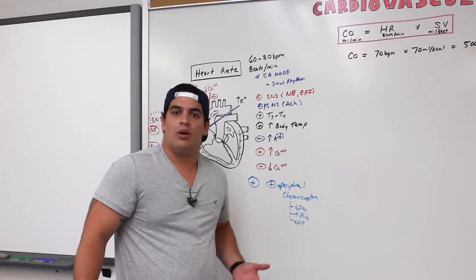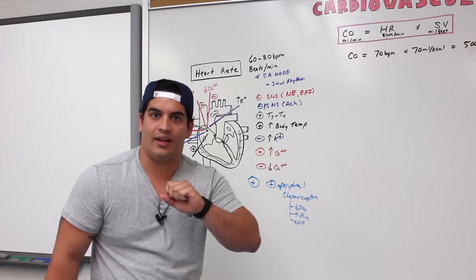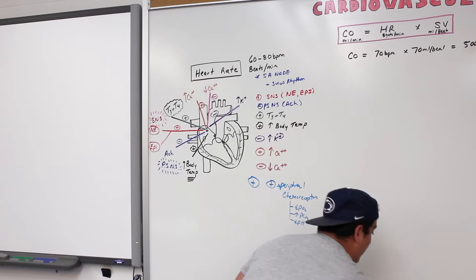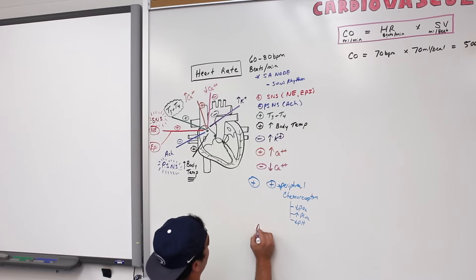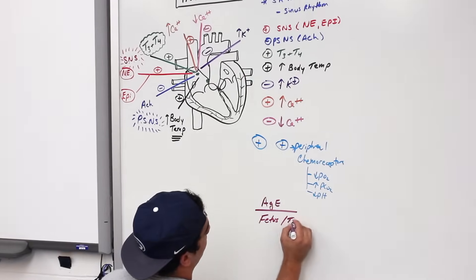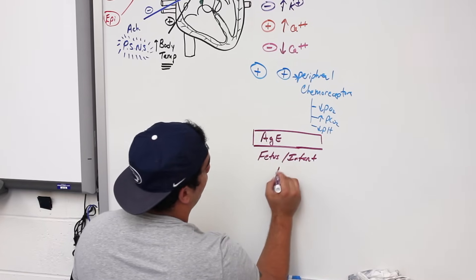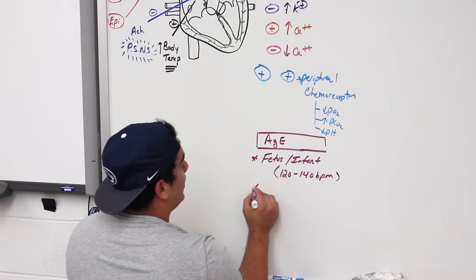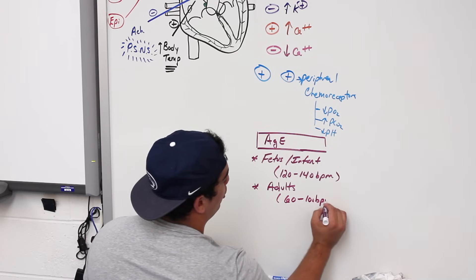Age also affects heart rate. Fetuses and infants have extremely high heart rates — around 120 to 140 beats per minute. Adults have heart rates ranging from 60 to 100 beats per minute at rest.